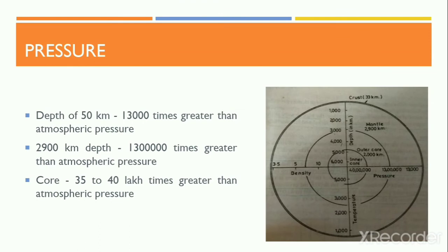Looking into pressure, there is a phenomenal increase in pressure with increase in depth. At the base of the crust, approximately at a depth of 50 kilometers below the surface, the pressure is 13,000 times greater than atmospheric pressure. At a depth of 2,900 kilometers, the pressure becomes 1,300,000 times greater than atmospheric pressure. Moving towards the core, the pressure increases and reaches 3,500,000 to 4,000,000 times greater than atmospheric pressure.